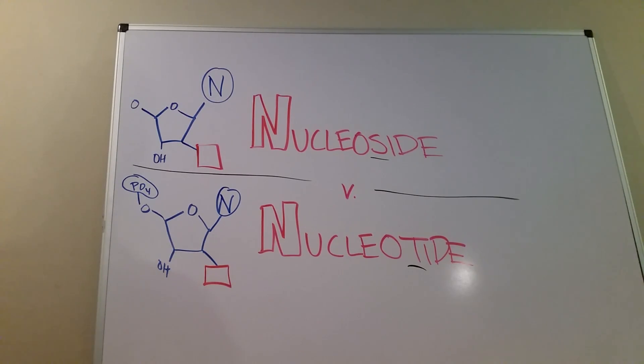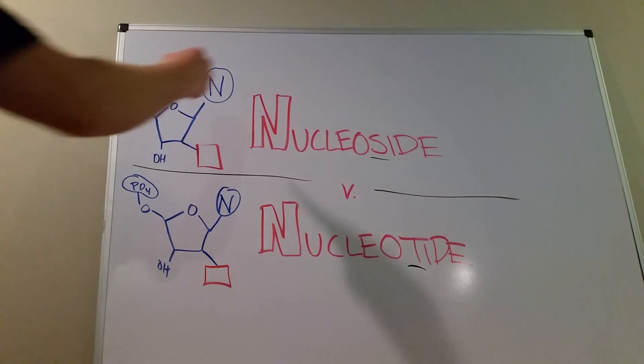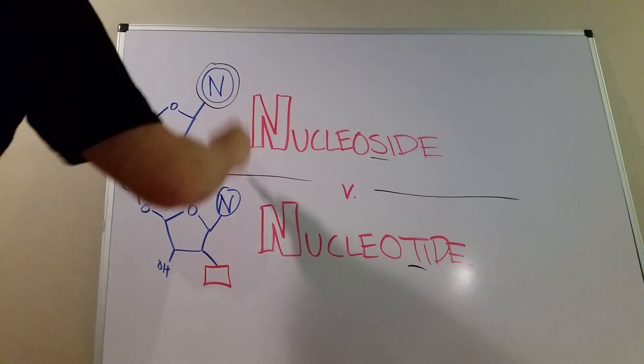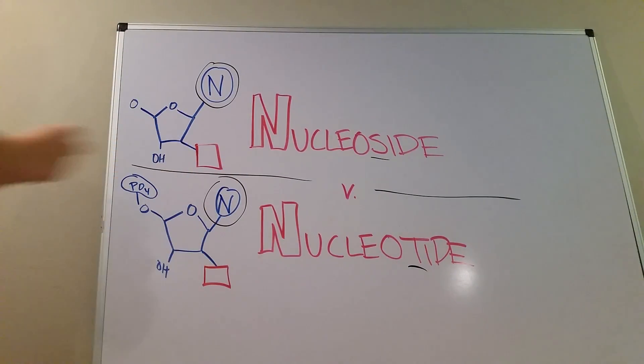We have another video on purines versus pyrimidines and that might be a good starter before we get to this point because that video explains these N's here in both these drawings. Those N's represent a nitrogenous base, which is a fancy way of saying that N thing there is explained in different videos. Check that out first.